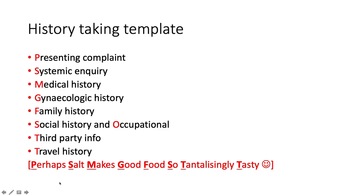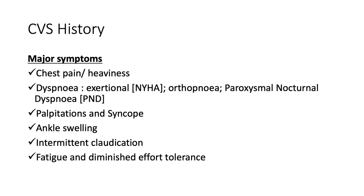Honing into the systemic inquiry for the cardiovascular system: you want to elicit a history of chest pain or heaviness. Remember, diabetics may be having a myocardial infarct and may not necessarily have chest pain — they have chest pain equivalent symptoms like dyspnea, dysautonomic features, nausea, vomiting, etc. For dyspnea, use the New York Heart Association scale to quantify this. We'll talk about orthopnea and paroxysmal nocturnal dyspnea. Palpitations married to syncope — if they have one, inquire about the other. Also ask about ankle swelling, intermittent claudication, and fatigue with diminished effort tolerance.